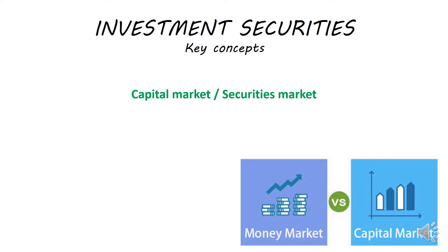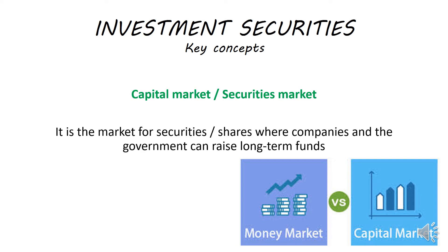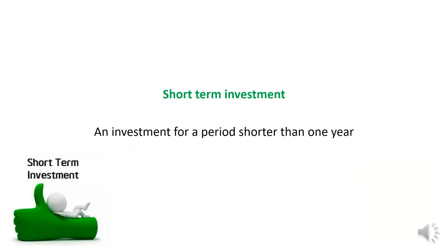I referred earlier to the capital market — the JSE is part of the capital market. The capital market, or securities market, is the market for securities or shares where companies and the government can raise long-term funds. On the capital market, this is the place where long-term savings and borrowing happen. We also have a money market, which is for short-term funds. A short-term investment is when you make an investment for a period shorter than one year — for example, if you invest for two days, 26 days, or 32 days.